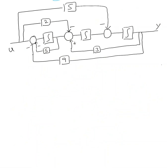Here is the next example. Here also we have three integrators, so we'll have three state variables: x1 with x1 dot, x2 with x2 dot, and x3 with x3 dot. Looking at the diagram, x1 dot equals x2 minus 5u.